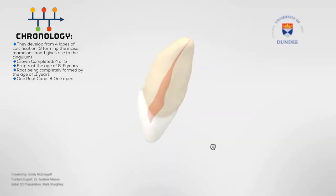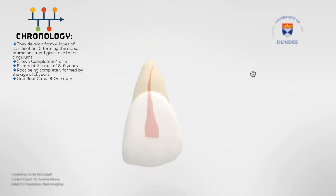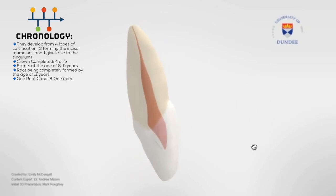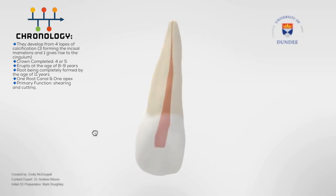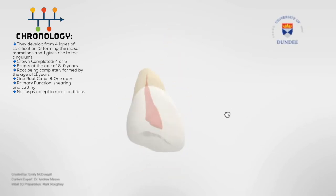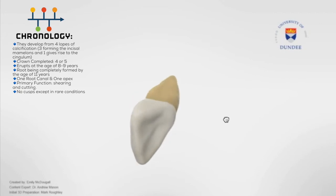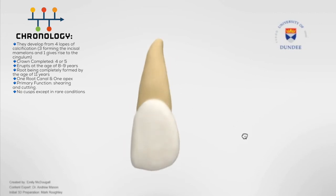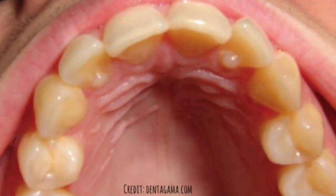In nearly all permanent maxillary lateral incisors, there is one root canal with one apex. Their primary function is for shearing and cutting. There are generally no cusps on these teeth, but a rare condition known as talon cusps is most prevalent on maxillary lateral incisors.